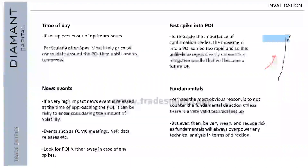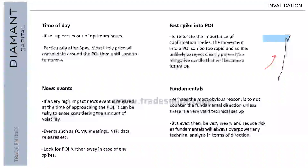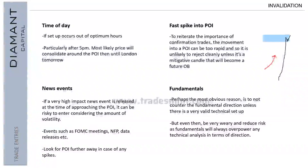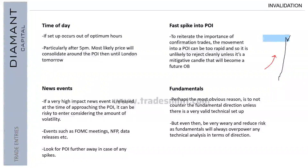The second invalidation factor is news events. If a very high-impact news event is released at the time your point of interest is being approached, it can be very risky to enter considering the volatility. Events such as FOMC meetings, NFP, CPI, and PPI can cause a lot of volatility. Your point of interest might be perfect, but you might get 20-pip moves in just a few candlesticks, so reserve yourself, wait till after the news event, and then look for entries.